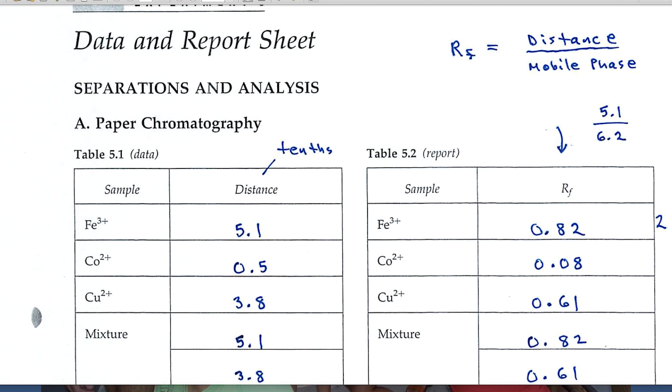Let's look at the other side here, the column that's labeled report. And now you'll take those distances that the ions have traveled and you'll calculate the RF value. RF is equal to the distance that the ion migrates or the spot over the distance that the mobile phase has migrated. So my calculation, 5.1, the distance of iron ion over the distance that the mobile phase traveled, 6.2, would give me an RF value of 0.82.